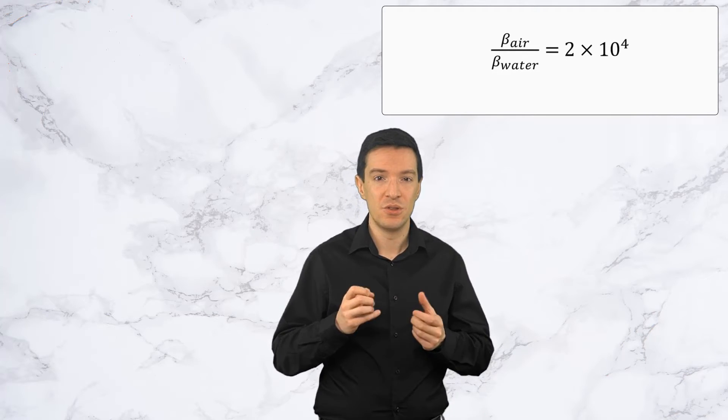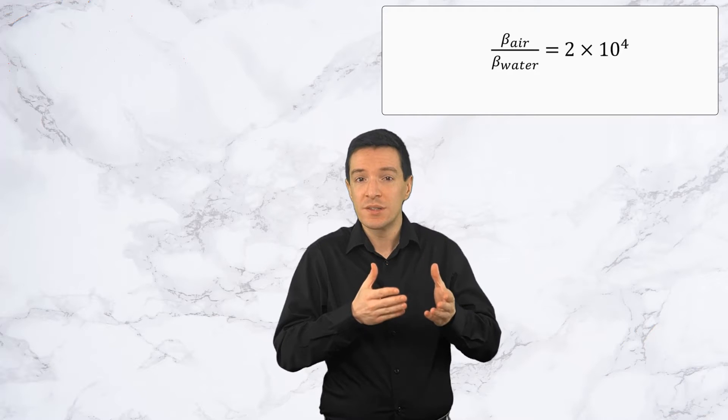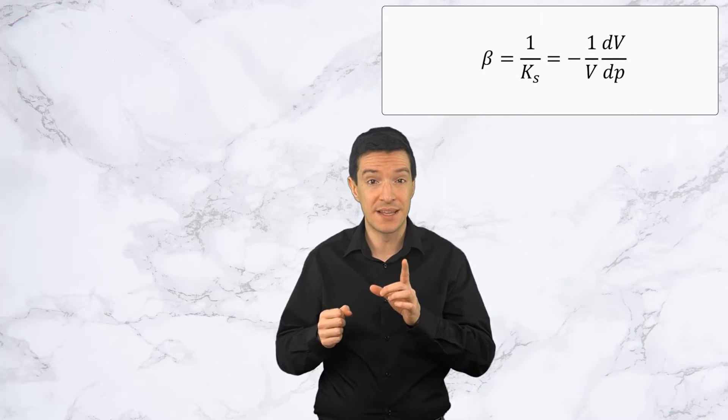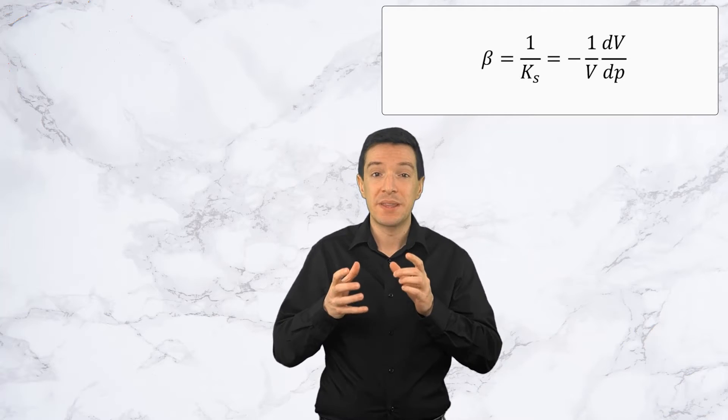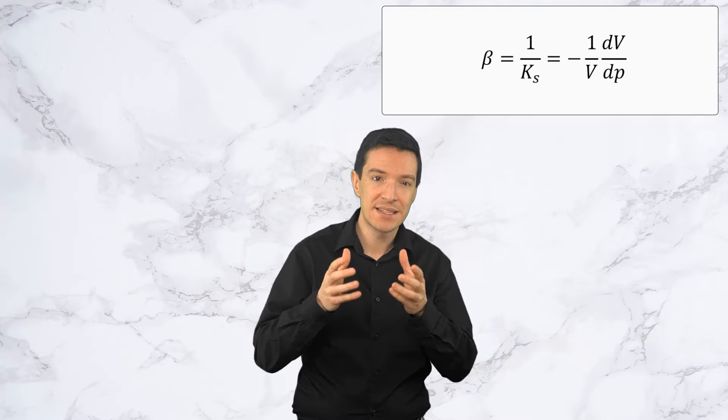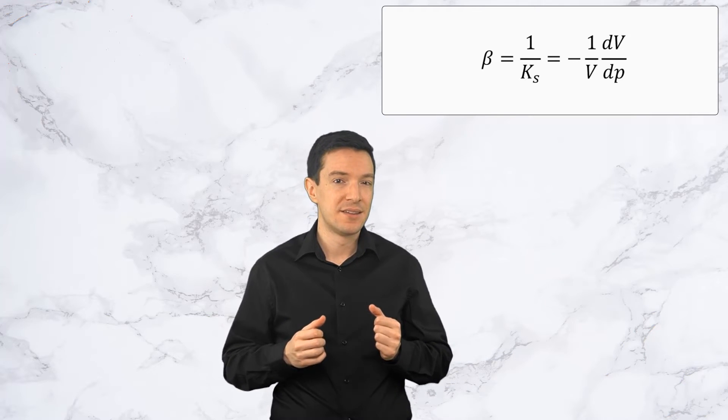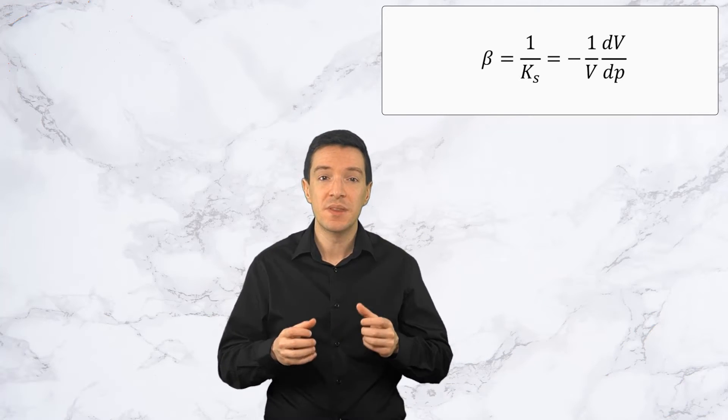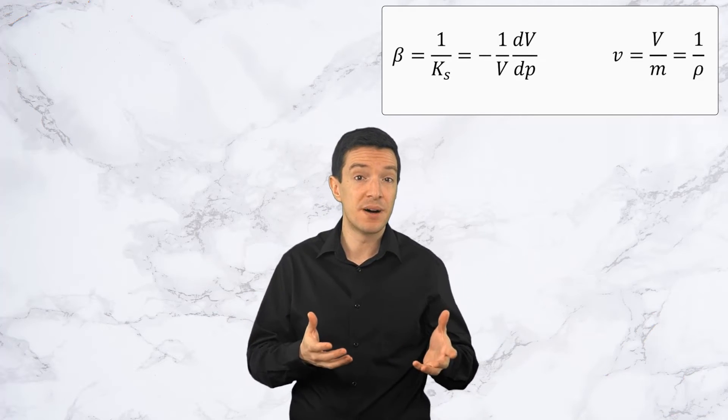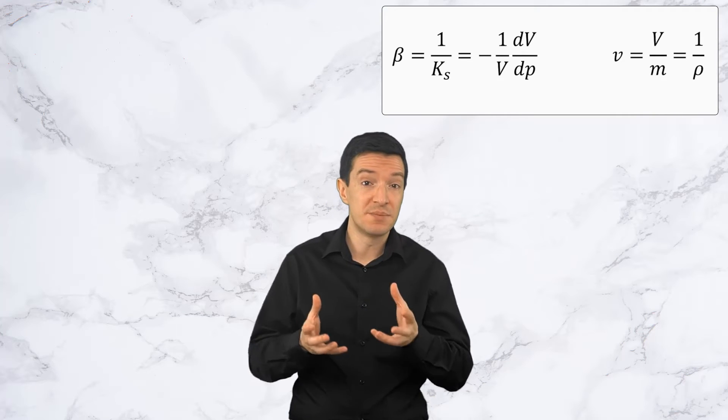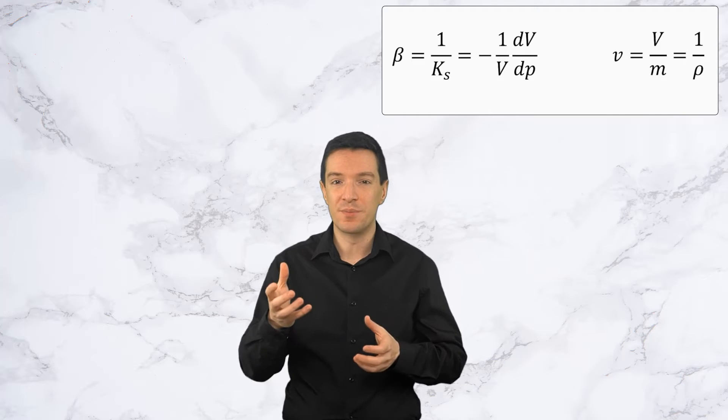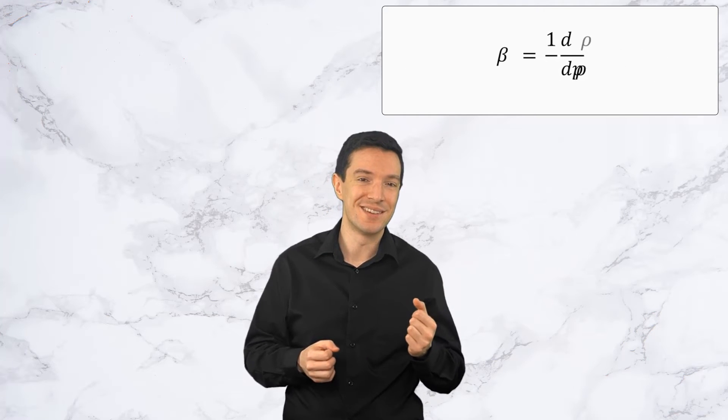Now, you may be thinking, wasn't a compressible flow defined as a variable density flow? But there is no density in this equation. Well, let us fix that. If we assume unit mass for the fluid, since the density is nothing but the inverse of the specific volume, we can rewrite the equation for compressibility as shown here.